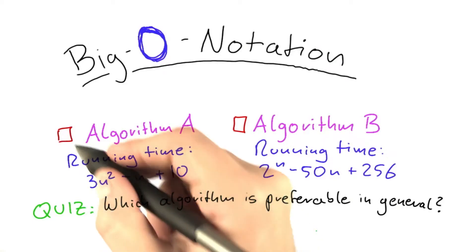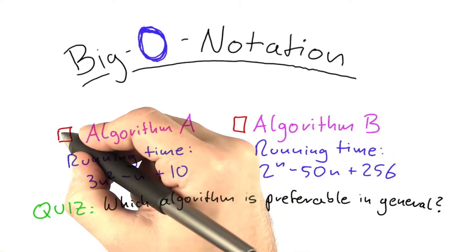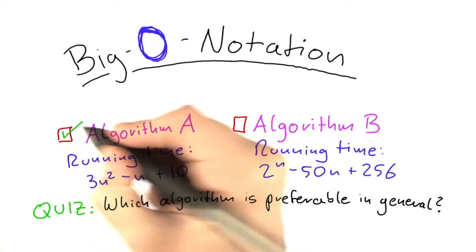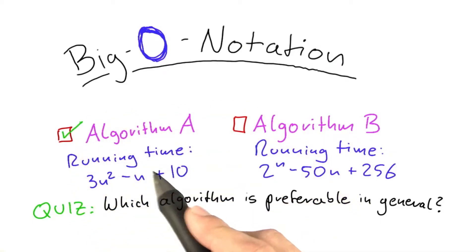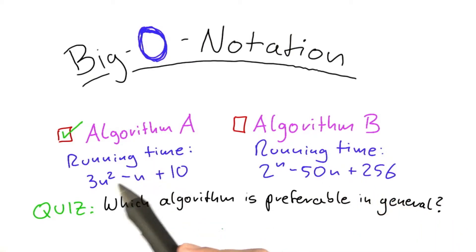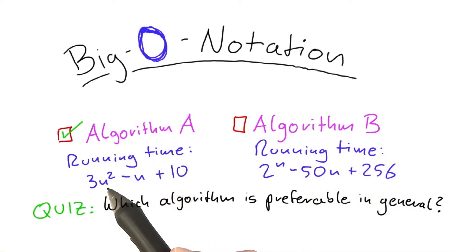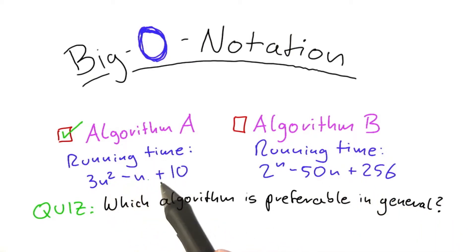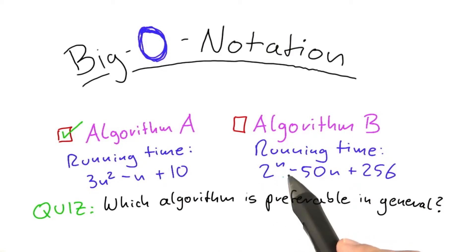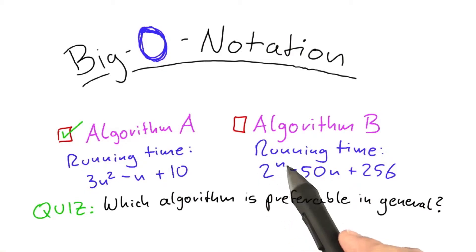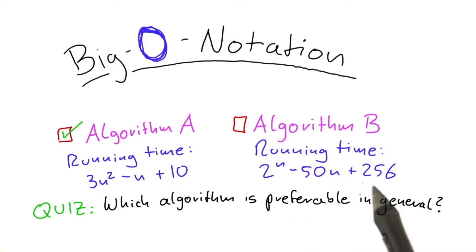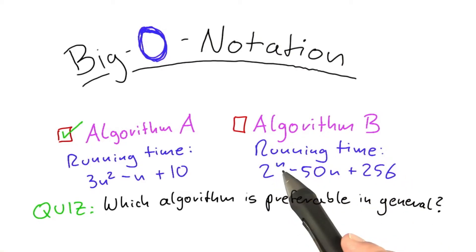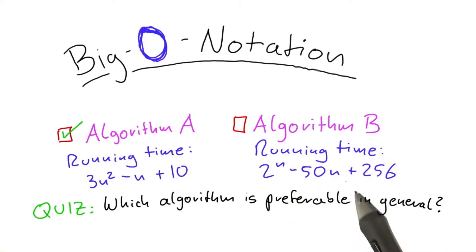In general, I would think that algorithm A would be preferable to algorithm B because the running time of algorithm A is 3n squared minus n plus 10, and here we have 2 to the power of n. So just as with the algorithm of Alice, this function here will grow very fast if n increases.